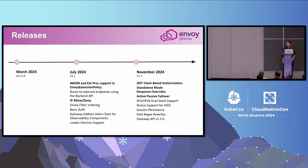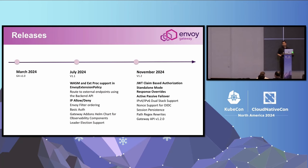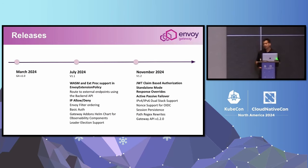The last time we met was at KubeCon EU in March. We had just GA'd with 1.0. Since then, we've been releasing every quarter with 1.1 in July and 1.2 in November. We've been following the same release cadence as Envoy Proxy, and we lag by about two weeks. The support policy for each of these releases is six months, so we've also released patch fixes for bugs and CVE fixes.